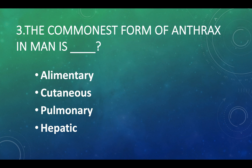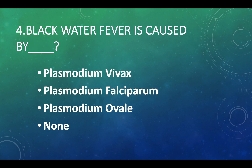The commonest form of anthrax in man is: Option A — alimentary, Option B — cutaneous, Option C — pulmonary, Option D — hepatic. Answer: Option B, cutaneous. Black water fever is caused by: Option A — Plasmodium vivax, Option B — Plasmodium falciparum, Option C — Plasmodium ovale, Option D — none of these.